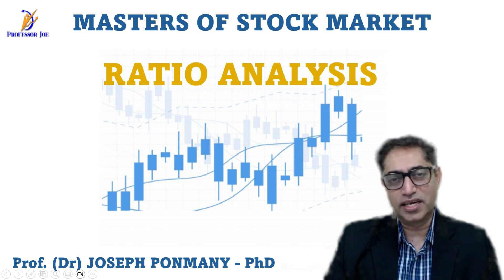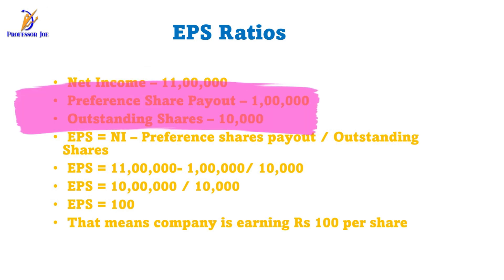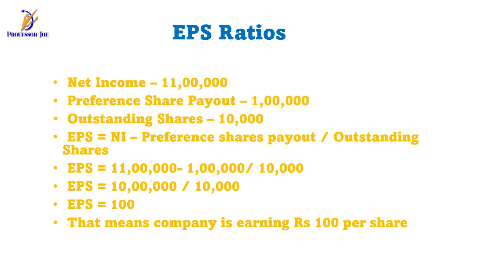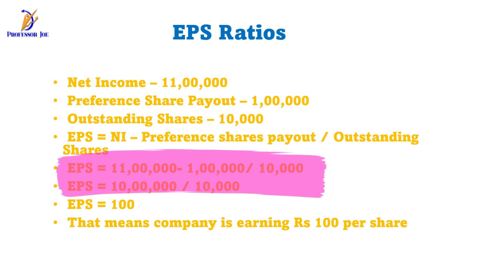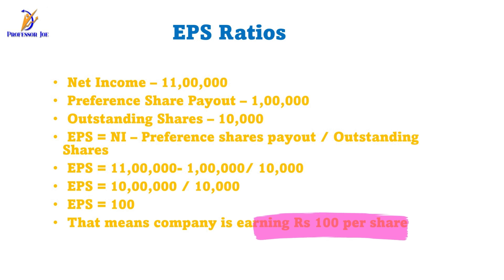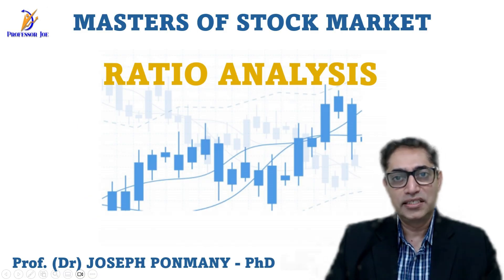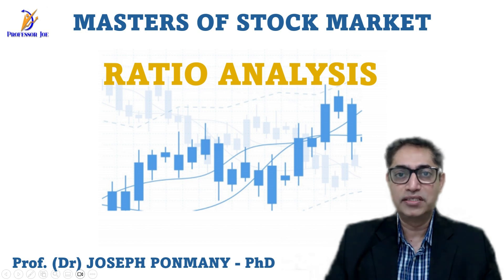Let's take an example. A company has a profit after tax of 11 lakh rupees and has to pay 1 lakh rupee in dividends to preference shareholders, with 10,000 outstanding shares. The EPS calculation would be: 11 lakhs minus 1 lakh = 10 lakhs, divided by 10,000 outstanding shares, giving an EPS of 100 rupees. This means the company is earning 100 rupees for every single shareholder, whether split into retained earnings and dividends or not.